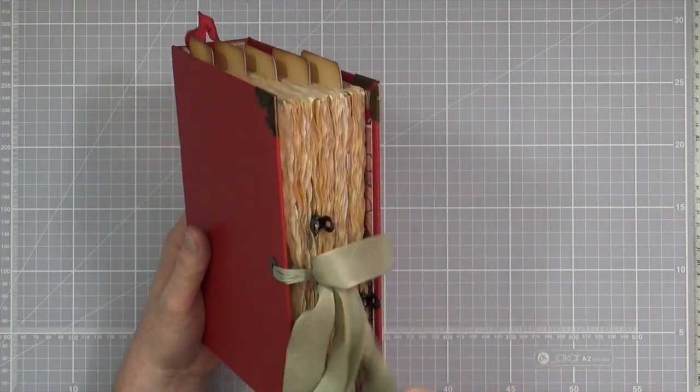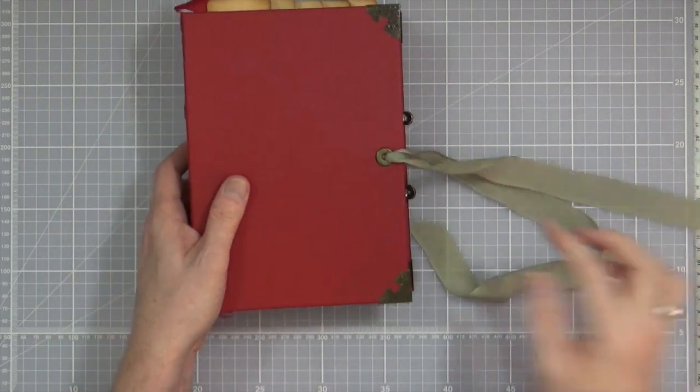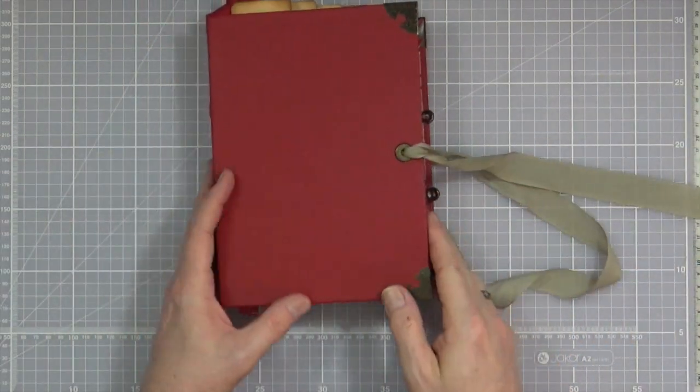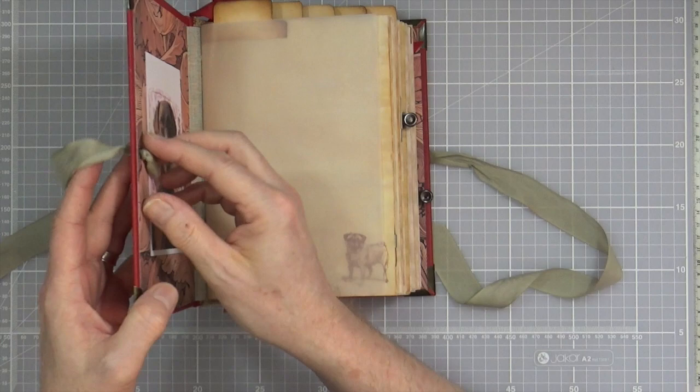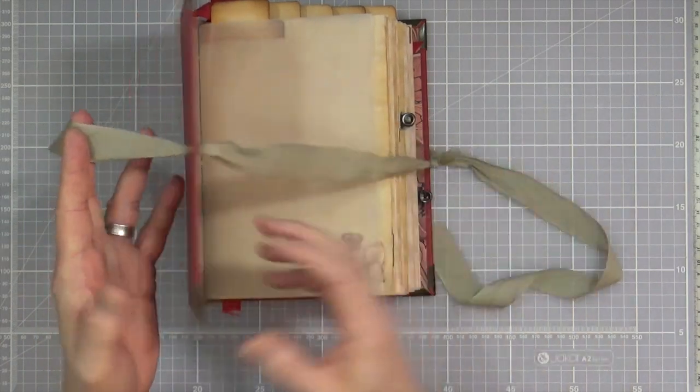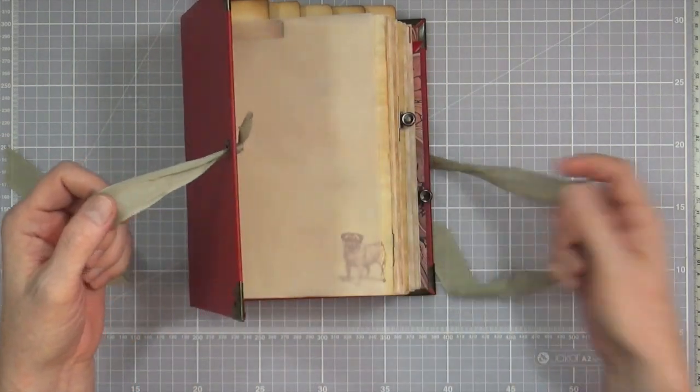So it's got a ribbon closure. Again I've only done it not through and underneath the book cloth. I've done it so that if you want to change it you can swap it out for a more appropriate one if you don't like the ribbon that I've supplied.